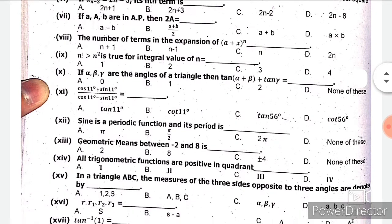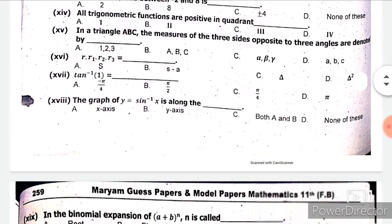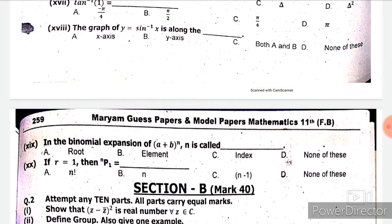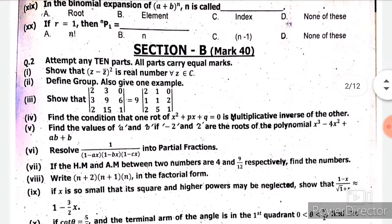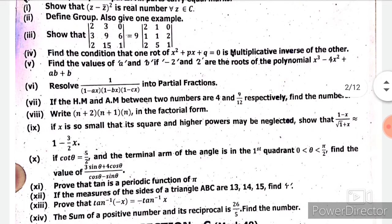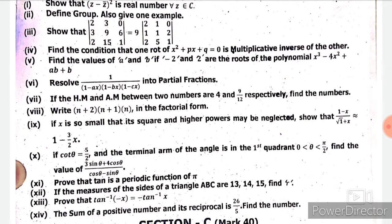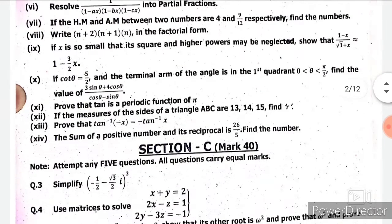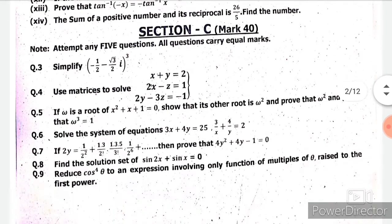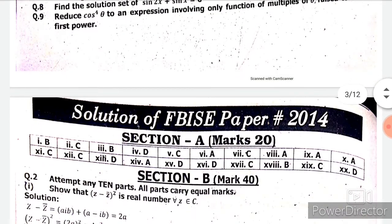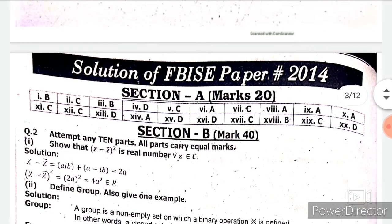So let's start question number one which is MCQs. Here are MCQs numbered 10, 11, 12, 14, 15, 16, 17, and 20. Then we are having section number B which contains 40 marks — we have to attempt 10 out of 14. And section number C which also contains 40 marks — we have to attempt 5 out of 7. You can see in the screen the long question answers of the 2014 past paper.